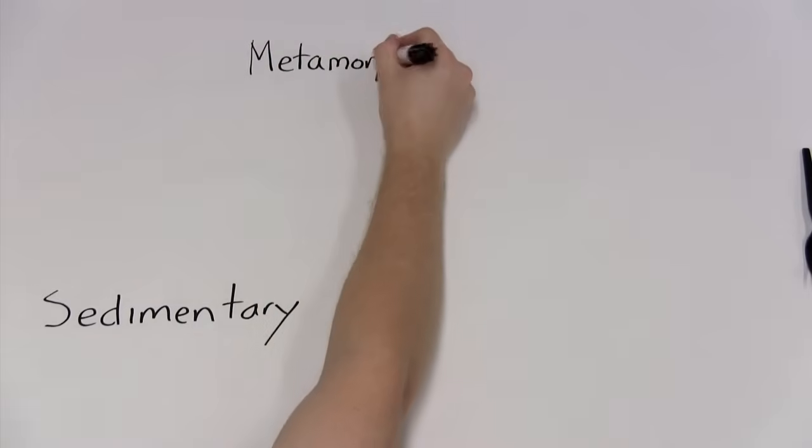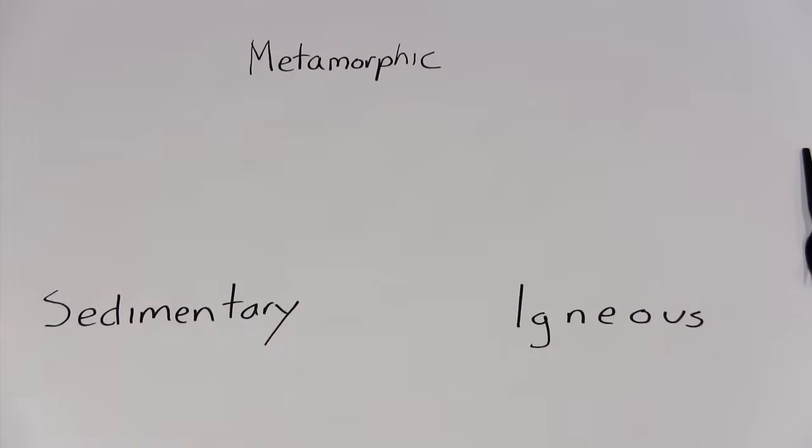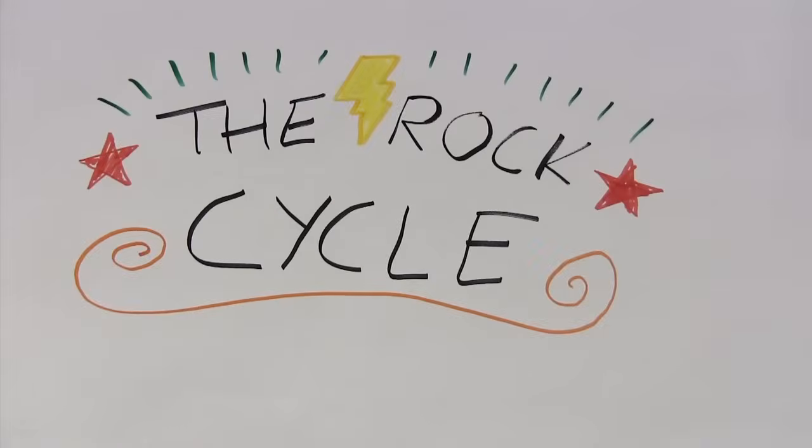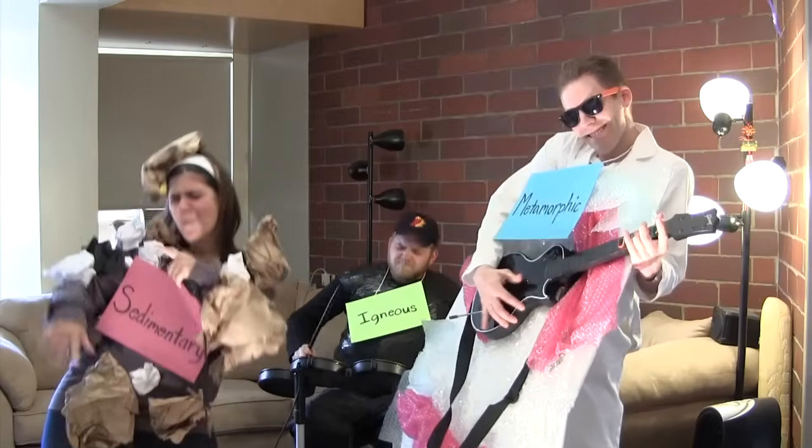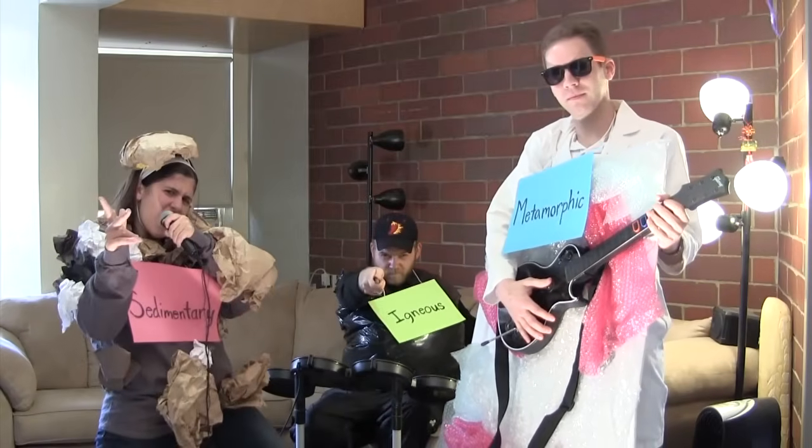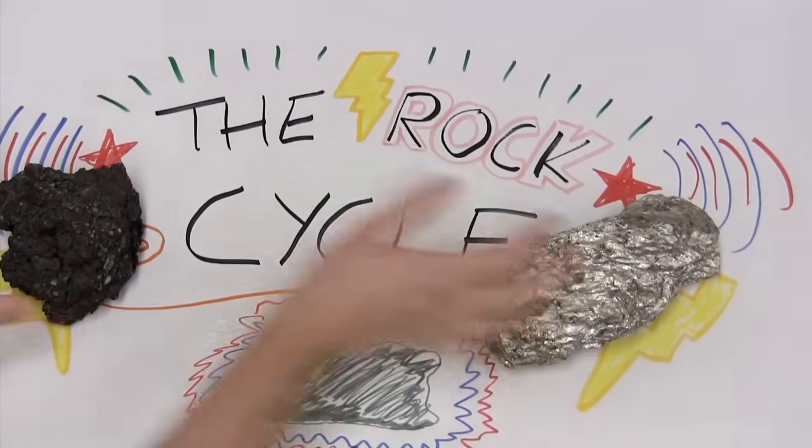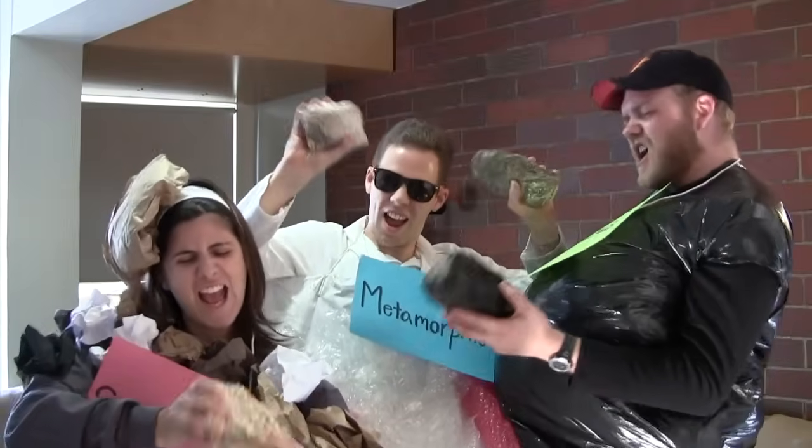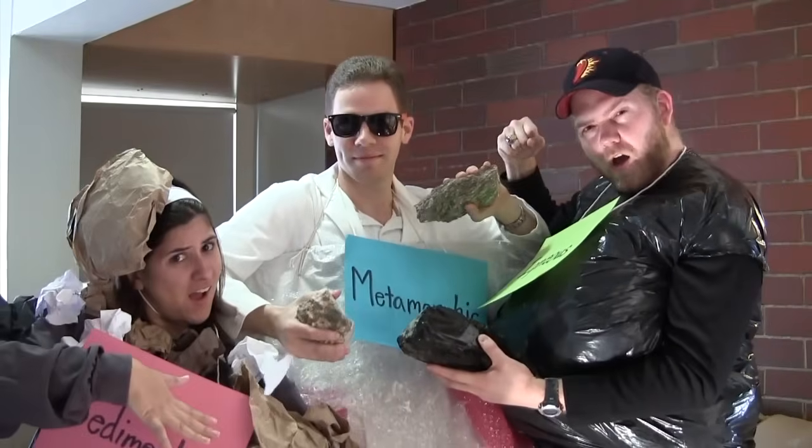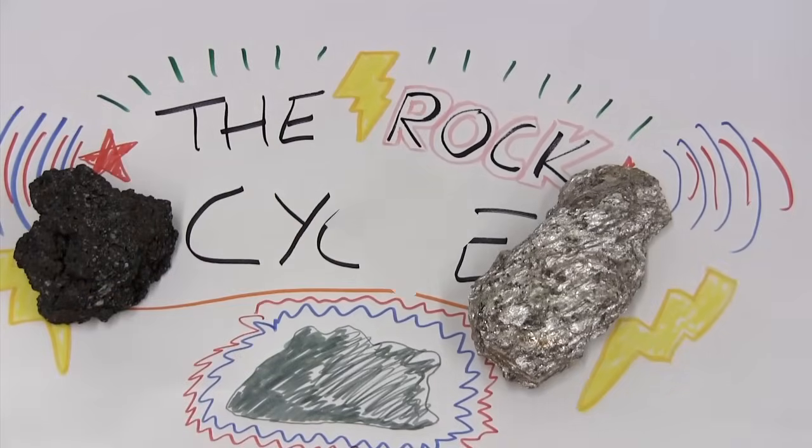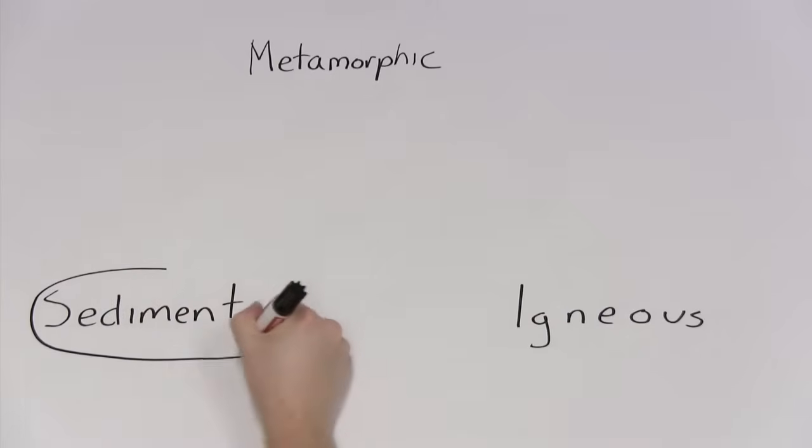Sedimentary, metamorphic, and igneous rocks change into each other in a process we call the rock cycle. No, not that kind of rock. This kind of rock. Yeah, that's more like it. The first type of rock we'll talk about is sedimentary.